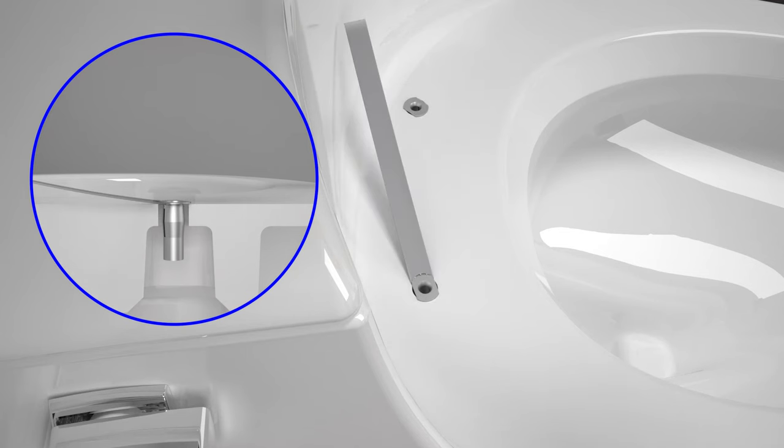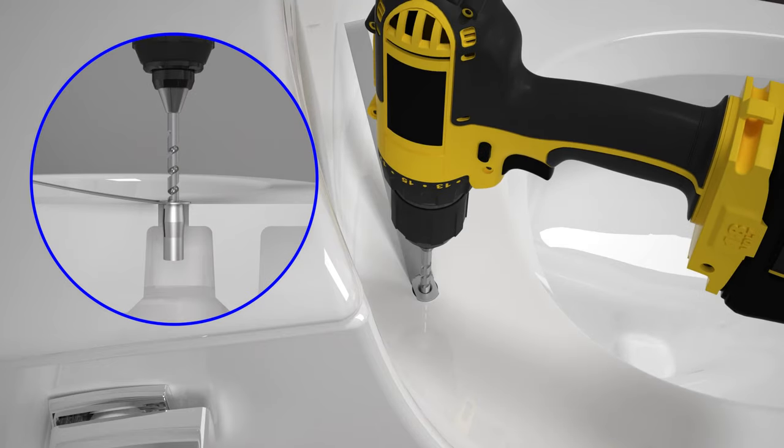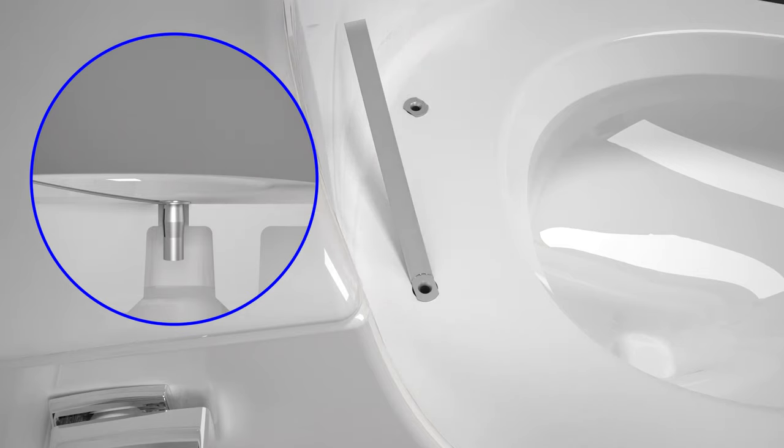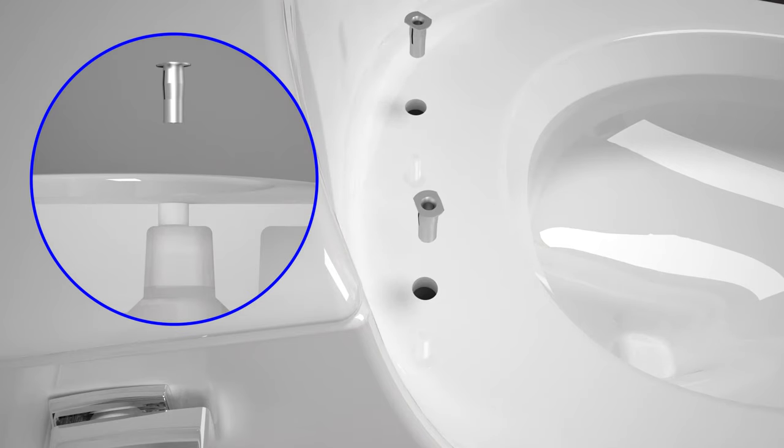Once the old bolts have been removed, use the stabilizer tool to hold the anchor in place. Then use an 11/32 inch drill bit to drill out the existing anchors, being careful not to scratch the toilet.